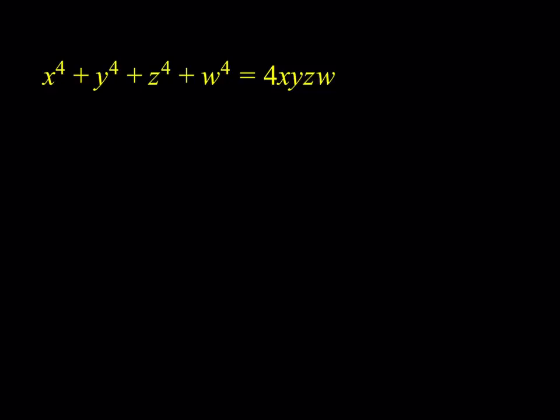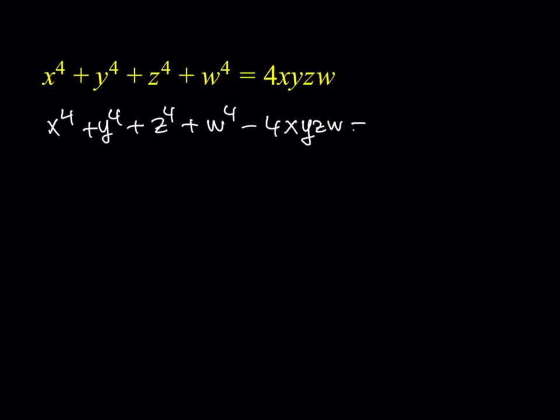The first thing I'm going to do is get everything on the same side so that I get zero, so it's going to look like: x to the fourth plus y to the fourth plus z to the fourth plus w to the fourth minus four·x·y·z·w equals zero.